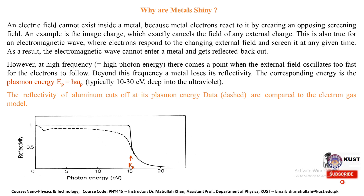A question arises: why are metals shiny? An electric field cannot exist inside a metal because metal electrons react to it by creating an opposing screening field — for example, the image charge, which exactly cancels the field of any external charge. This is also true for electromagnetic waves, where electrons respond to the changing external field and screen it, so electromagnetic waves cannot enter a metal and get reflected back out.